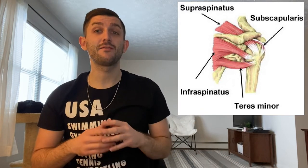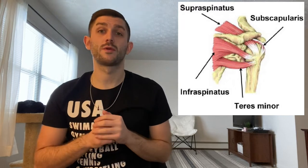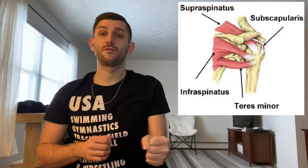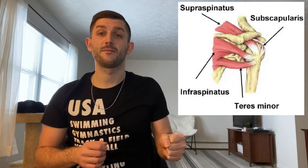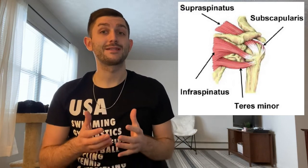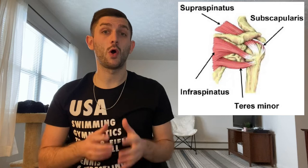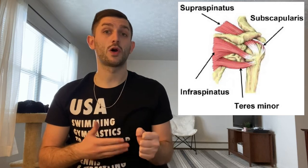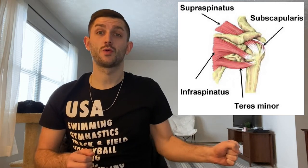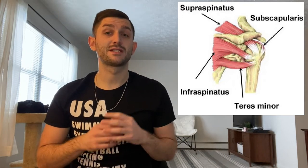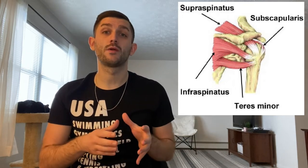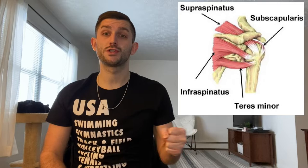Secondly, we have the infraspinatus. The infraspinatus is one of your external rotators, responsible for rotating your shoulder in an outward direction. Thirdly, we have the teres minor, which is also an external rotator, also responsible for rotating your shoulder outward. Fourth, we have the subscapularis. The subscapularis is an internal rotator, responsible for rotating your arm or shoulder towards yourself or towards your body.